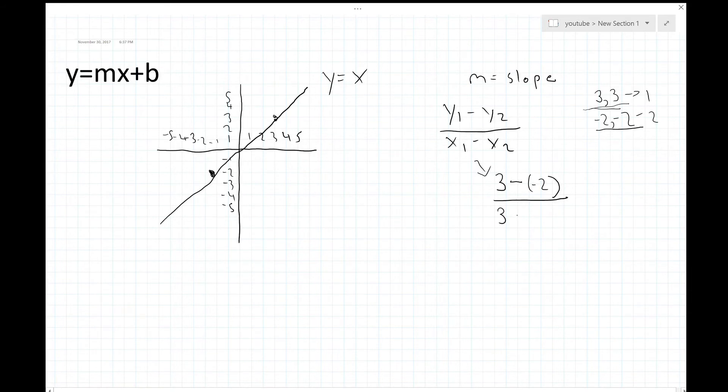3 minus minus 2 which is also 5. So, 3 minus minus 2 is 3 plus 2 which is 5 divided by 3 minus minus 2 which is also 5. 5 over 5 which is 1. The slope of this line is 1.